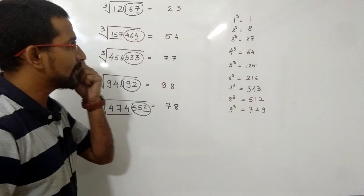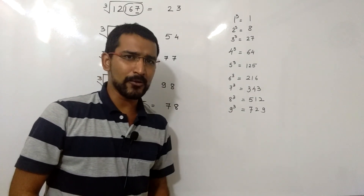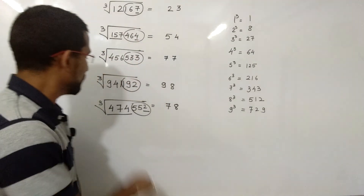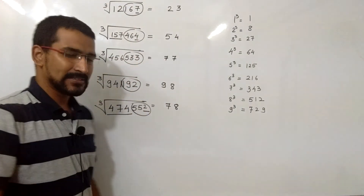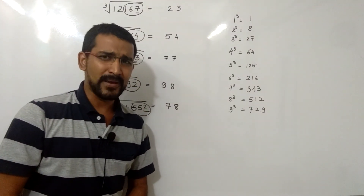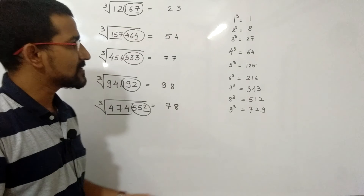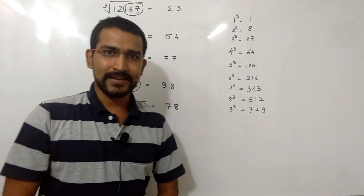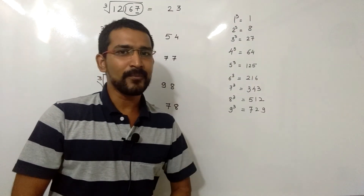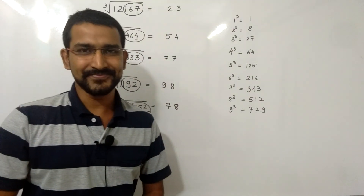This is how we can find out the perfect cube root value up to 6 digits within a few seconds. By practice you can calculate in just 3 seconds. Hope it will be helpful for your mathematics calculations. Thank you.